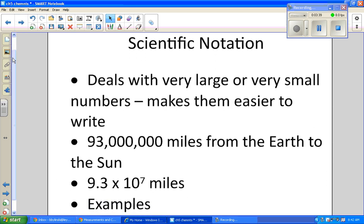The first piece of measurement you need to understand is what's called scientific notation, and this deals with very large or very small numbers, and it makes them easier to write. So for example, on the screen, you see 93 million miles from the Earth to the Sun. That's the distance. But instead of writing all those zeros, check out this notation here. 9.3 times 10 to the 7th miles. That is called scientific notation.